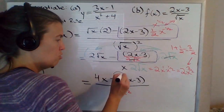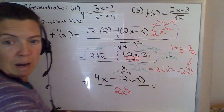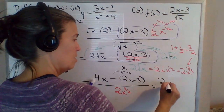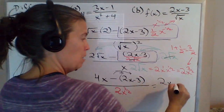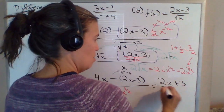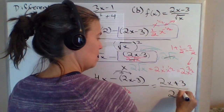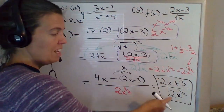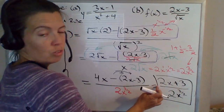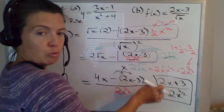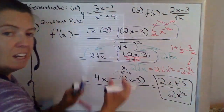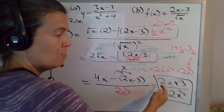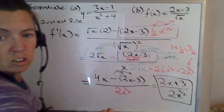One last thing we can do is distribute the negative and combine like terms. So 4x minus 2x gives you 2x, and distributing the negative gives plus 3 over 2x to the 3 halves. And there's your final answer. You cannot cancel the 2s — tempting as it is, 2 is not a common factor in that numerator. You have to write the numerator entirely as 2 times something else if you want to cancel the 2 in the denominator. If it's just part of a sum or subtraction in the numerator, you've got to leave it alone.